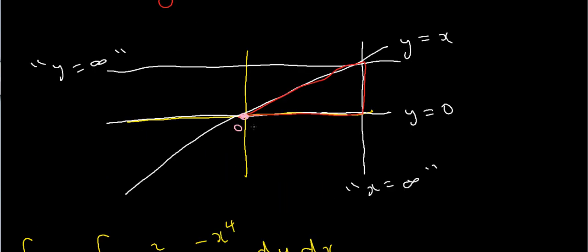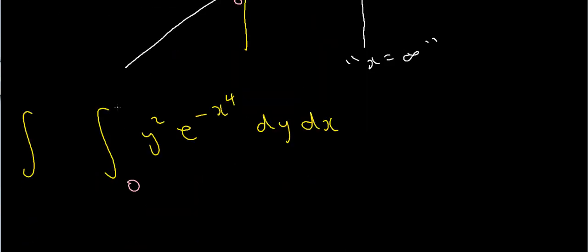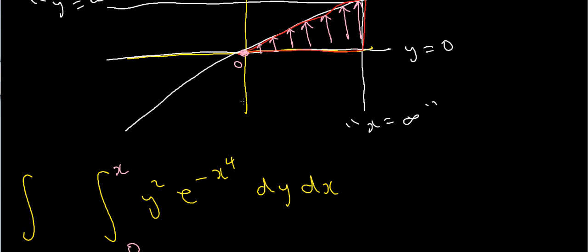Integrating in the direction of the y-axis, I start from y equals 0 and integrate upwards. Each time I do this, I hit the boundary of the line y equals x. So the region of integration is entirely determined by this line, and the upper limit in every case is just x. That takes care of the integral with respect to y.